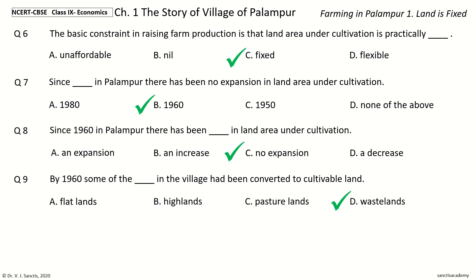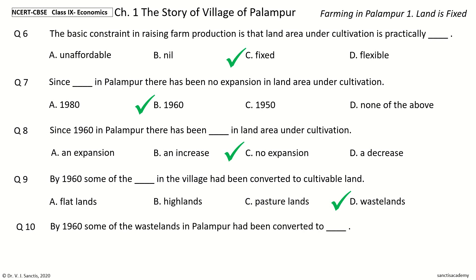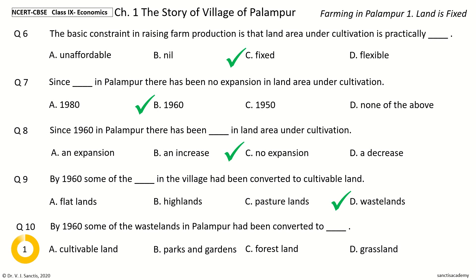Question 10: By 1960, some of the Wastelands in Palampur had been converted to Dash. The options are Cultivable Land, Parks and Gardens, Forest Land, Grass Land. Your time to choose. And the answer is Cultivable Land. So, by 1960, some of the Wastelands in Palampur had been converted to Cultivable Land.